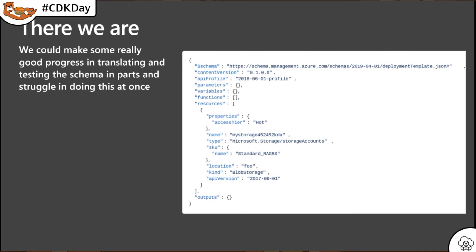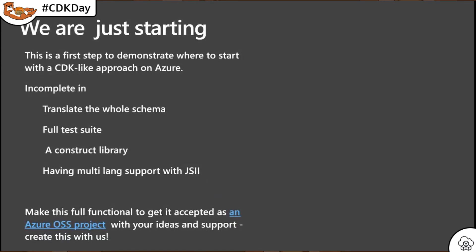Of course, AZ CLI validate would help us on validation to make sure we are right here. For those about to start building right away, here are some words of caution — we are just starting. This is just a first step to demonstrate how to start with a CDK-like approach on Azure. This is incomplete in translating the whole schema yet. We are missing the full test suite and a construct library, and we are still working on multi-language support using JSII. So we need and are looking for your help, ideas, and support to make this fully functional, and our goal is to get this accepted as an Azure open source software project — please create this with us.